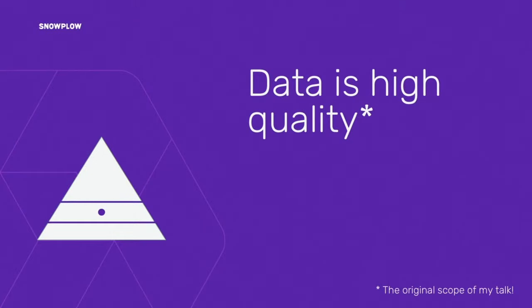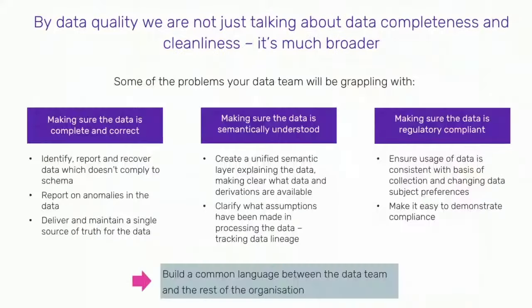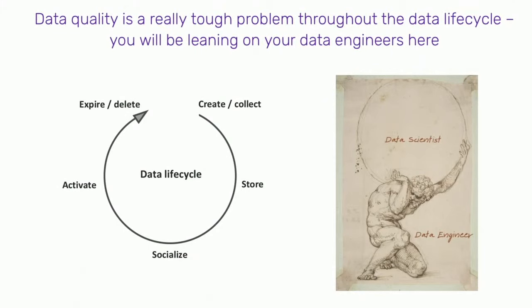The first of those harder problems is data being high quality. Data quality is a very tough problem throughout the whole data lifecycle, and you're going to lean heavily on your data engineers. At Snowplow, we think about the lifecycle as creating and collecting data, storing it, socializing it, activating it, and in today's privacy-conscious world, also handling expiry, deletion, and control of access.